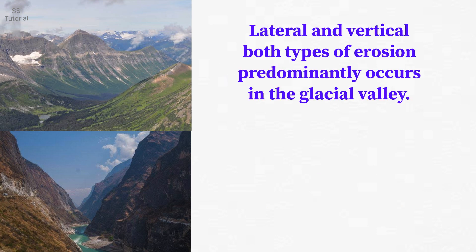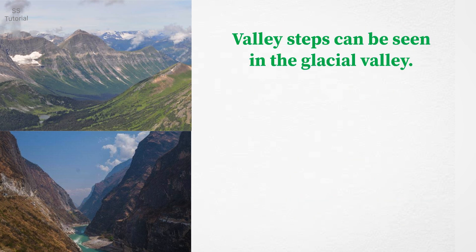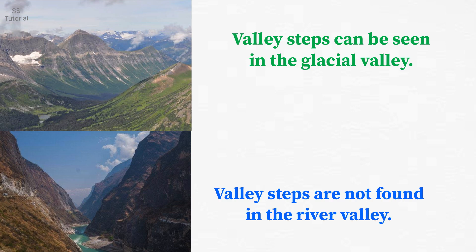Both lateral and vertical erosion predominantly occurs in glacial valleys, whereas in river valleys, vertical erosion occurs more predominantly compared to lateral erosion. Valley steps can be found in glacial valleys, formed by locally varying erosion depth of the valley glacier, whereas valley steps are not found in river valleys.